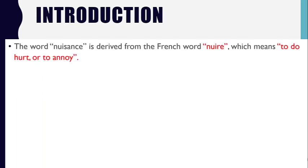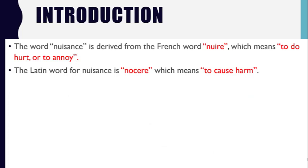The word Nuisance is derived from the French word 'Nuis', which means to do hurt or to annoy. The term 'Nuisance' has been taken from the French word, meaning nuksaan pahunchana ya phir parishan karna (to cause harm or to annoy). Its Latin term is 'nausser', which also means to cause harm.